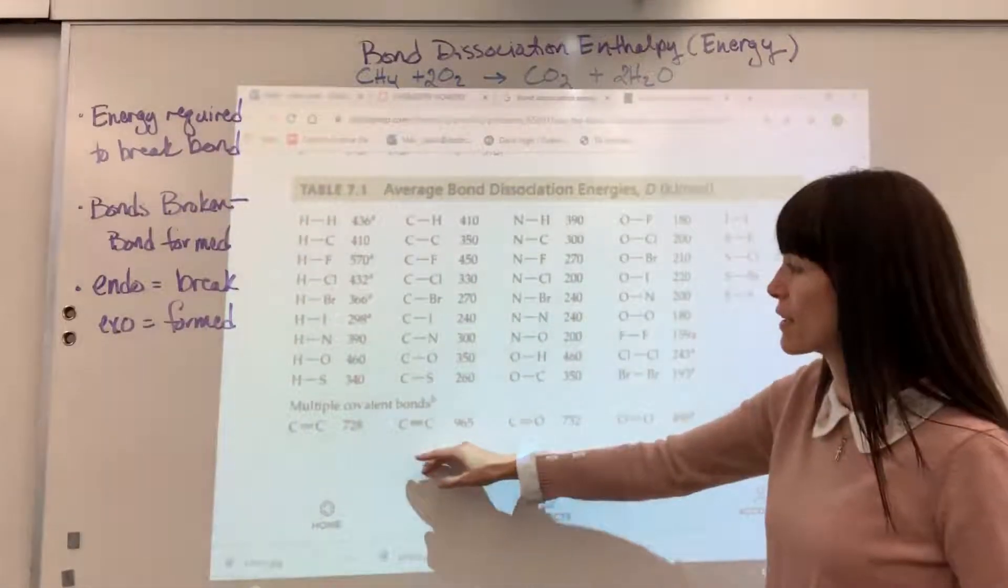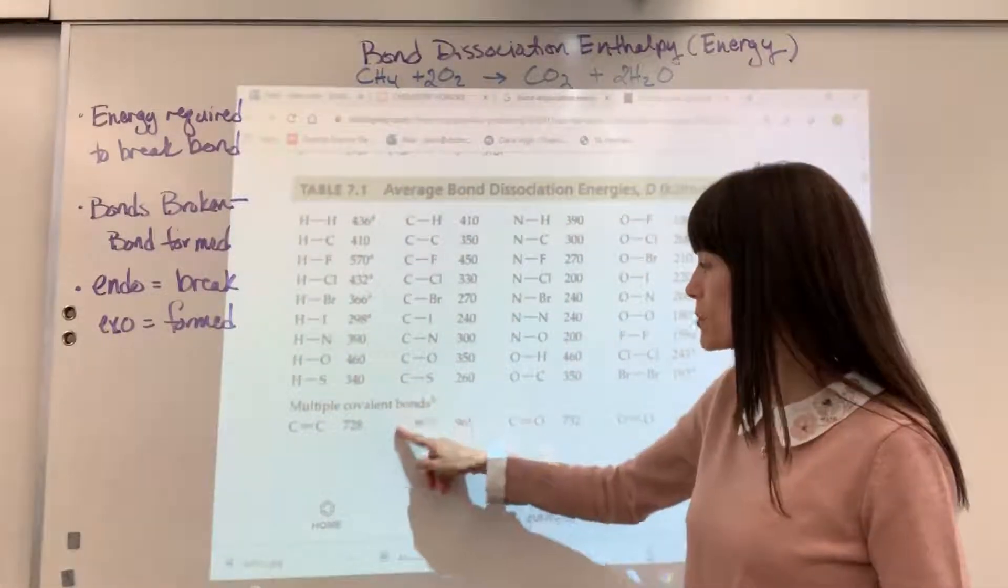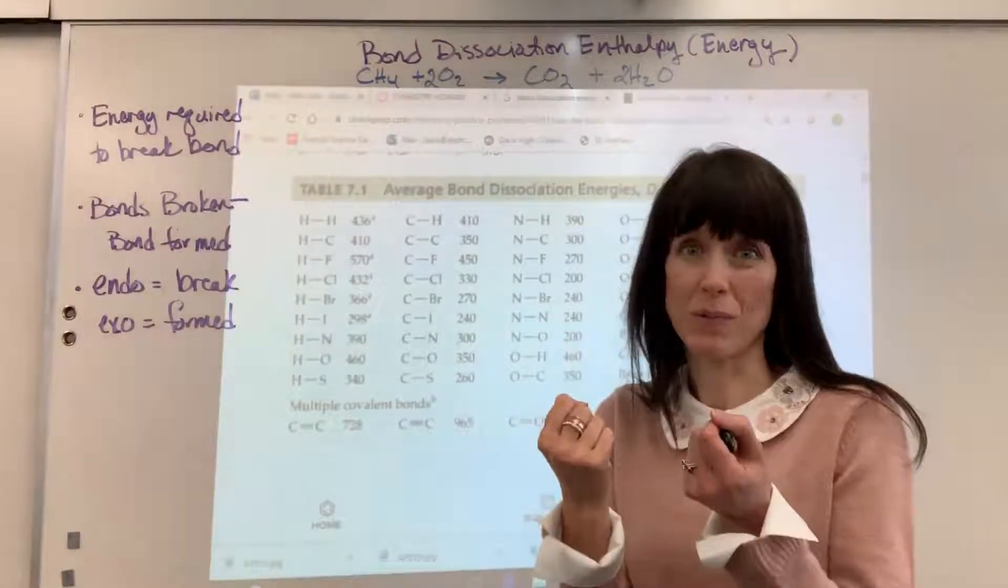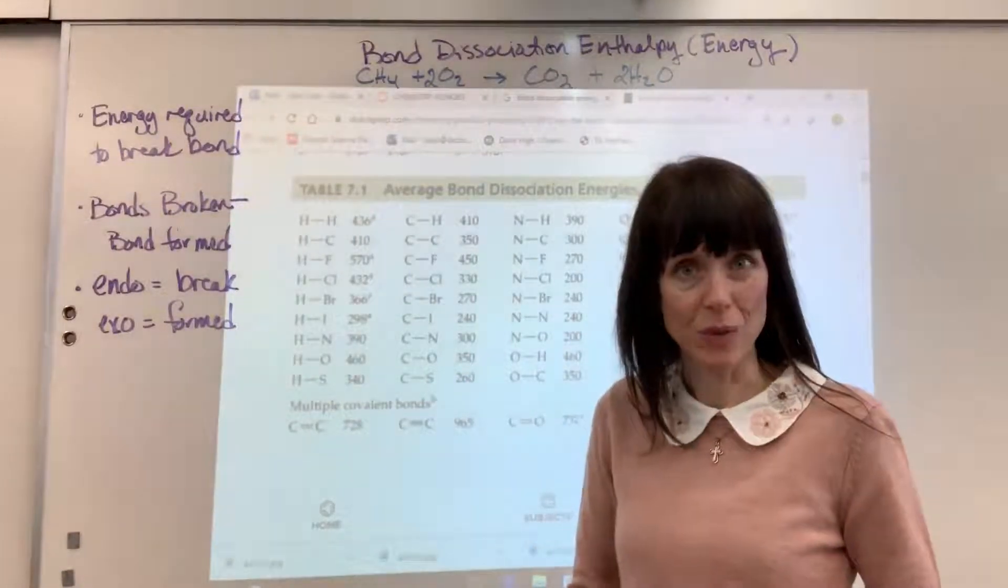Notice down here, that is a triple bond, a carbon-carbon triple bond. If I have one carbon-carbon triple bond, to break that one triple bond, those six electrons being shared, that takes 965 kilojoules per mole.